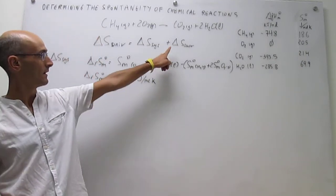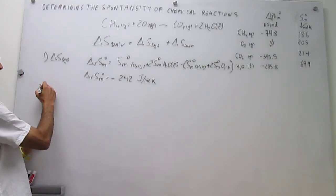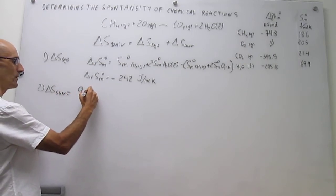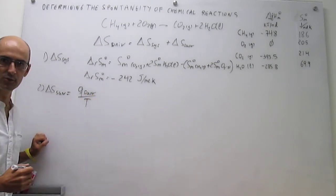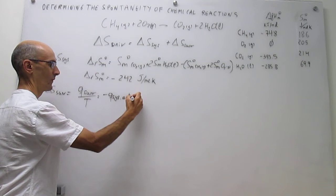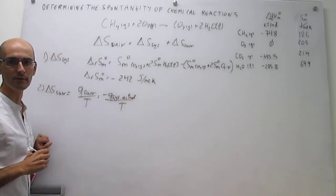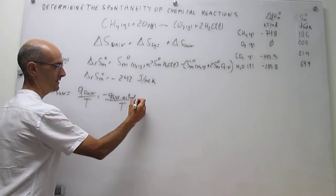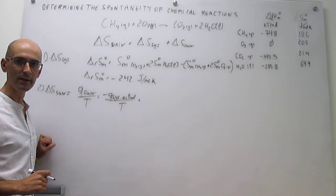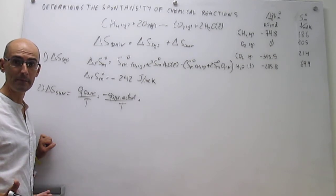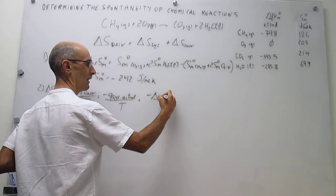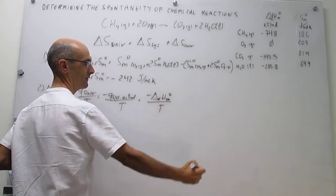So let's move to the second piece: the change in entropy of the surroundings. The change in entropy of the surroundings has a common expression — it is always equal to the heat in the surroundings divided by the temperature, which in this case is 298.15 K. We refer the surroundings to the system, so this is actually the heat evolved in the system. This is a chemical reaction that is isothermal and isobaric. The isobaric condition is important because at constant pressure, heat equals the change in enthalpy. So this is simply the change in enthalpy of the reaction divided by the temperature.